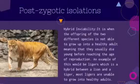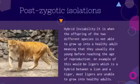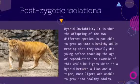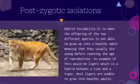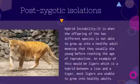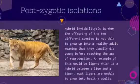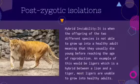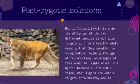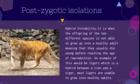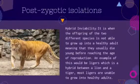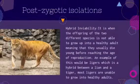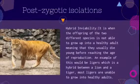Hybrid inviability is when the offspring of two different species is not able to grow up into a healthy adult, meaning they usually die young before reaching the age of reproduction. An example of this would be ligers, which is a hybrid between a lion and a tiger. Most ligers are unable to grow into healthy adults.